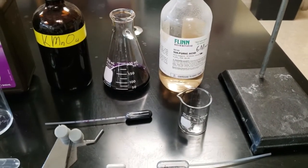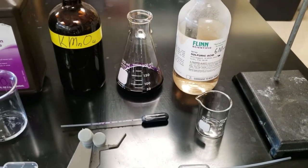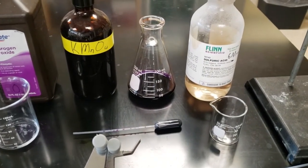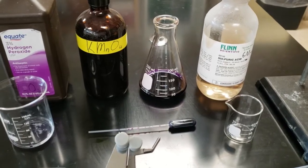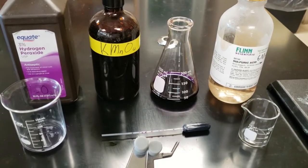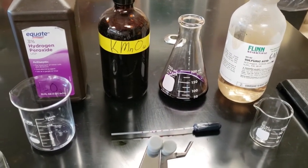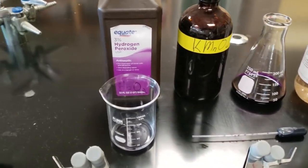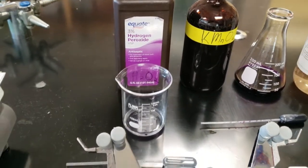There's the 6 molar sulfuric acid. We need to use that in excess for the reaction to happen and to keep the manganese from becoming manganese dioxide. We're going to pipette in 5 milliliters in this case.